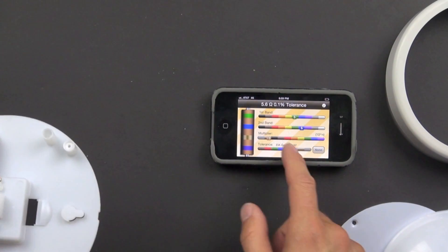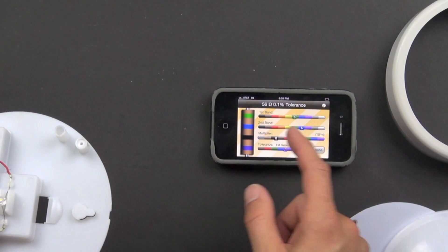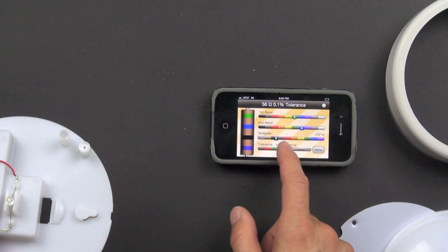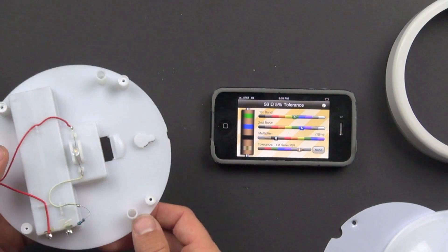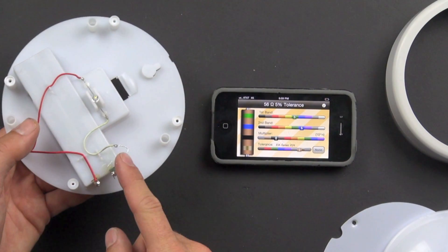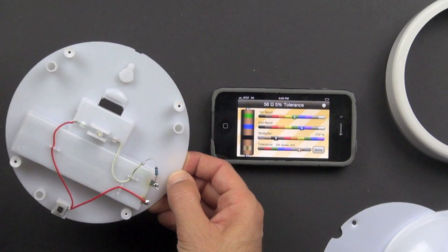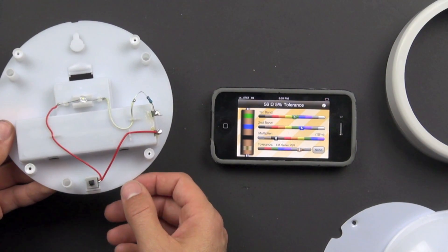Green. Oh wait, actually there's a black one. Sorry. And then the gold one. There we go. So this is a 56 ohm resistor. And that's the amount of resistance that that resistor provides.